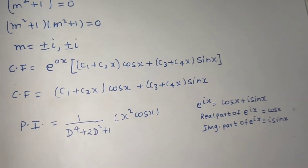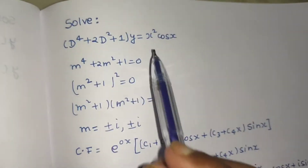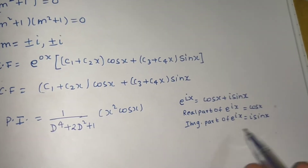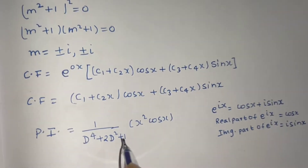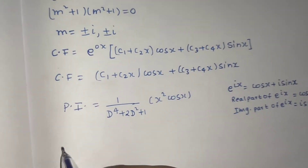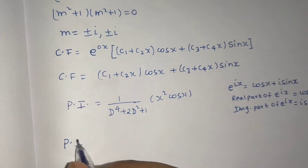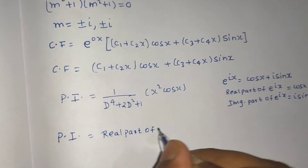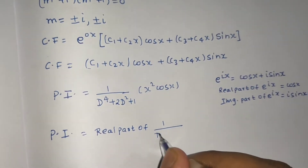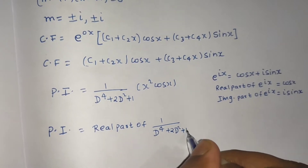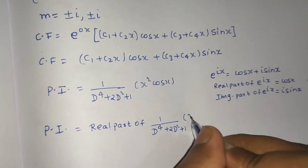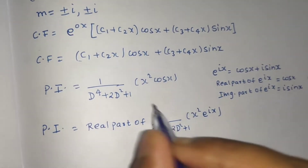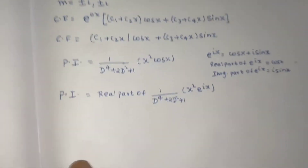This is important: whenever the RHS has cos x, we use the real part concept, and when it has sin x, we use the imaginary part. In this question, we use the first concept and say our particular integral is the real part of 1/(D⁴ + 2D² + 1) operating on x²·e^(ix), because the real part gives cos x.